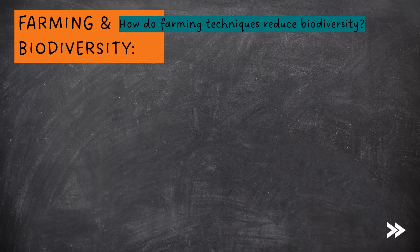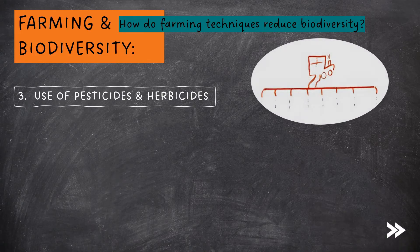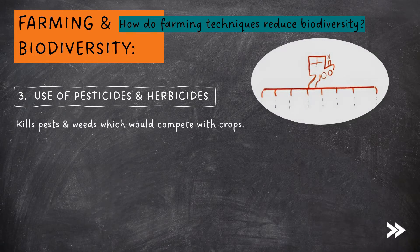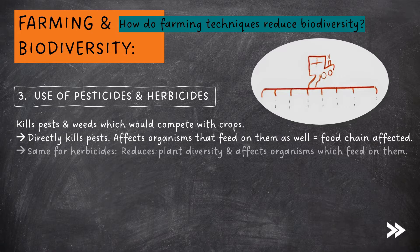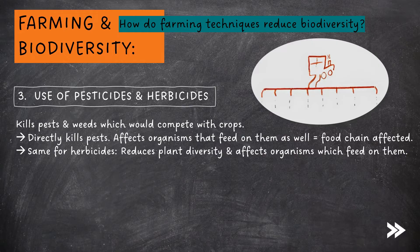Humans also use pesticides and herbicides in farming in order to kill pests and weeds which would otherwise compete with the crops. However, this directly kills pests and affects organisms that feed on them, affecting the whole food chain. The same applies for herbicides — they reduce plant diversity, and this therefore affects organisms which feed on these plants, affecting the whole food chain.